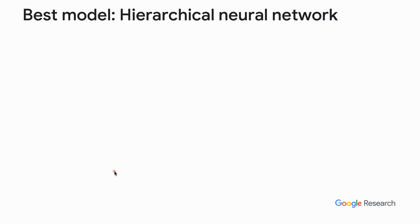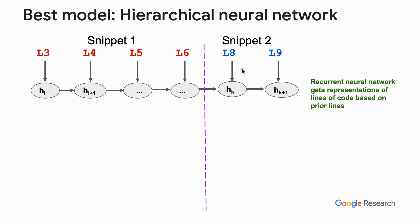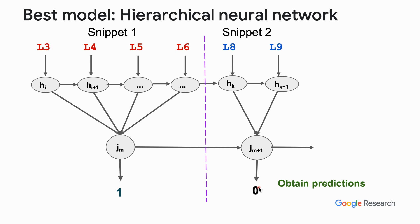I present the best model from our paper, which is a hierarchical neural network. Suppose we want to produce a prediction for two snippets: the first contains lines 3 to 6, and snippet 2 contains lines 8 and 9 subsequently in the same file. First, the neural network creates a representation for each line of code. This representation encompasses the content of that line but also the summary of the lines seen in the file so far. At a second level, the model creates a representation for snippets, comprising the content of the lines within the snippet but also a summary of the snippets so far in the file. With these two sequences and hence contextual representations, we can then obtain the prediction for each snippet.